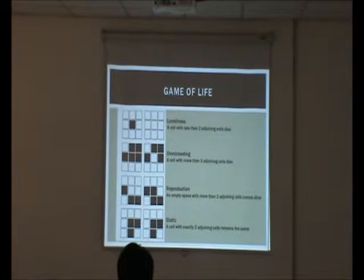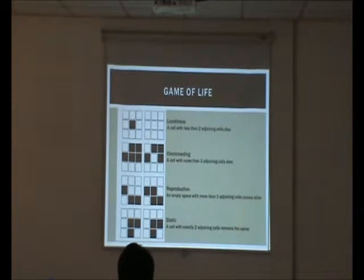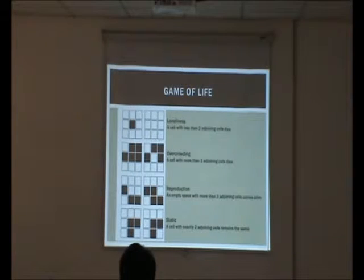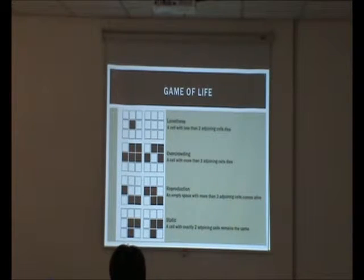The first rule is that a cell with too few neighboring cells will die. Imagine if you have only one cell and there are no other cells in the neighborhood — that cell will die. The second rule is that a cell with too many neighboring cells will also die, due to overcrowding. The third rule is reproduction: if you have an empty space, a neighboring cell will come alive due to reproduction.